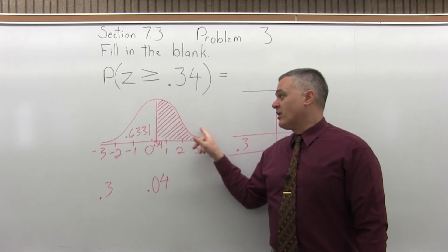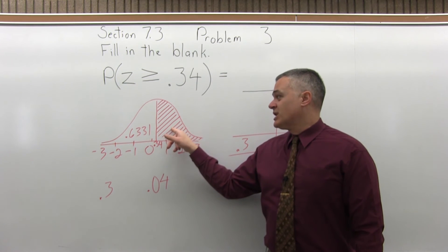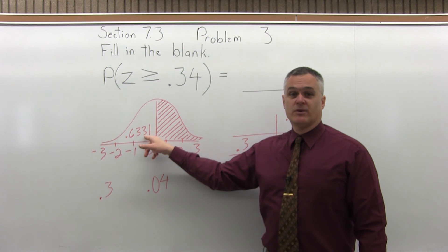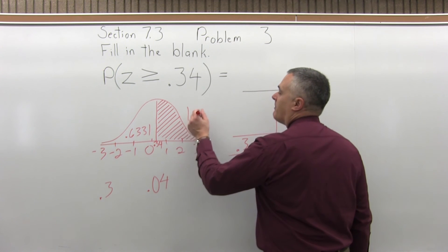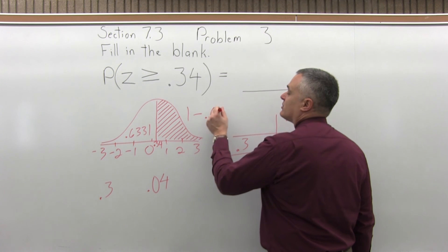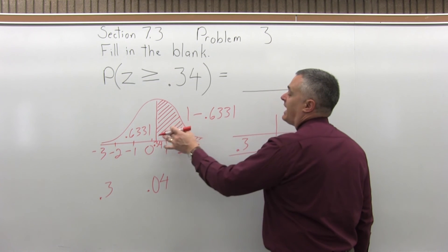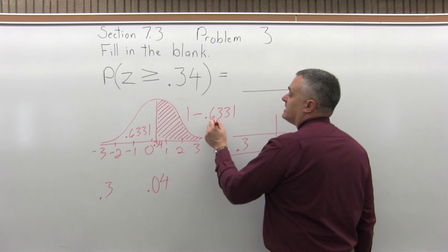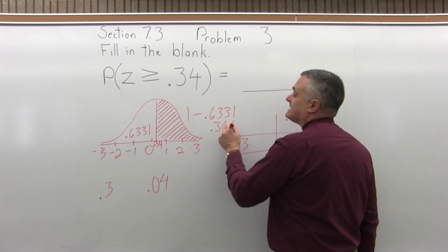The whole bell curve is 1. So the shaded part, plus the blank part that we found, must add up to 1. So if I do 1 minus .6331, I find that the shaded area is .3669.